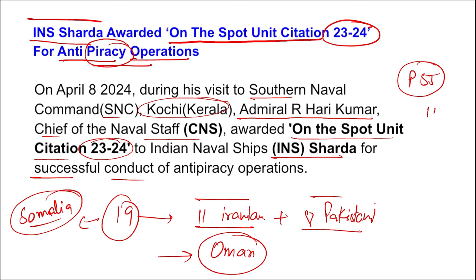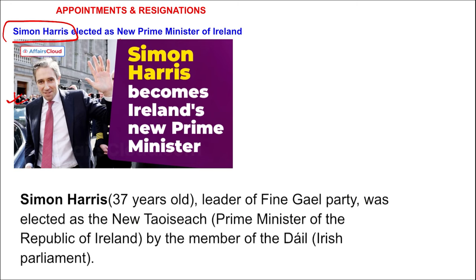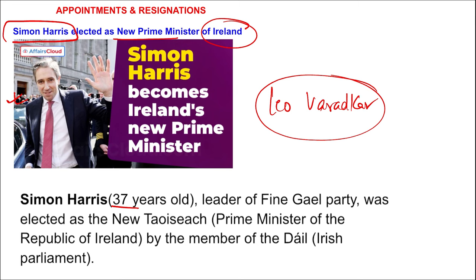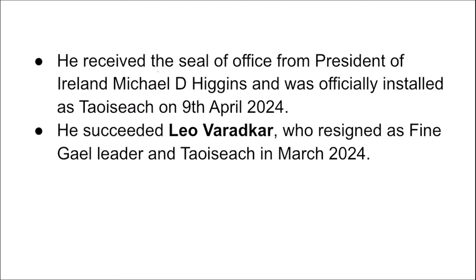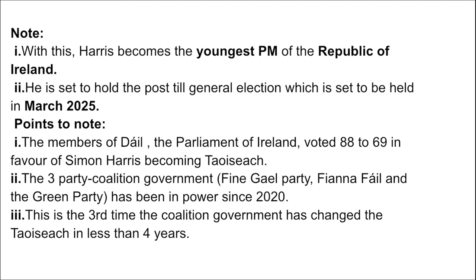Next appointments: Simon Harris has been elected as the new Prime Minister of Ireland. He is 37 years of age and succeeds Leo Varadkar. He received the seal of office from President of Ireland Michael D. Higgins, officially installed as Taoiseach on 9th April. With this, Simon Harris became the youngest Prime Minister of the Republic of Ireland. He is said to hold the post till the general election to be held in March 2025.